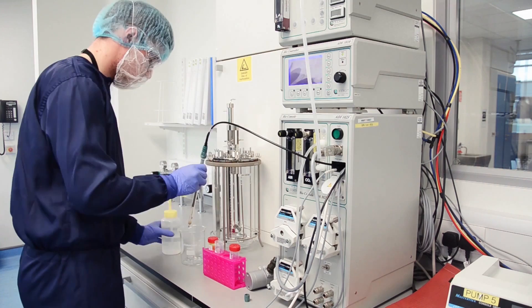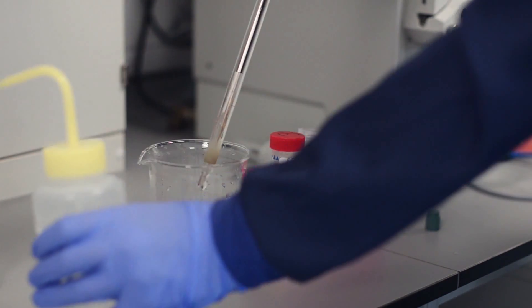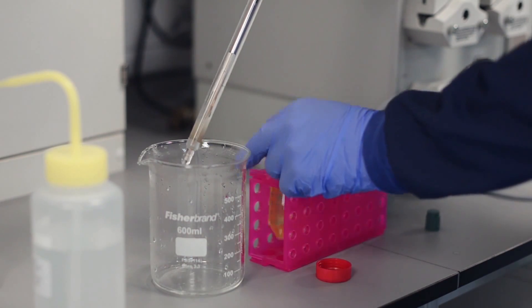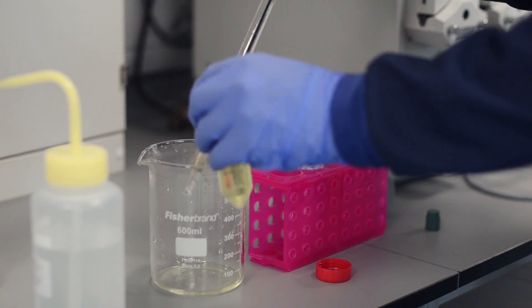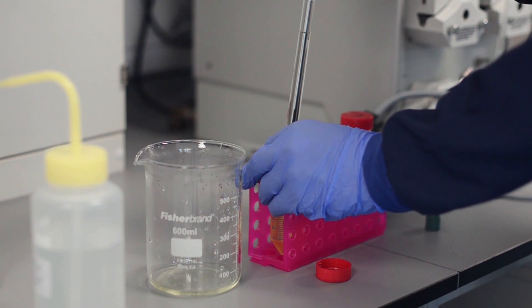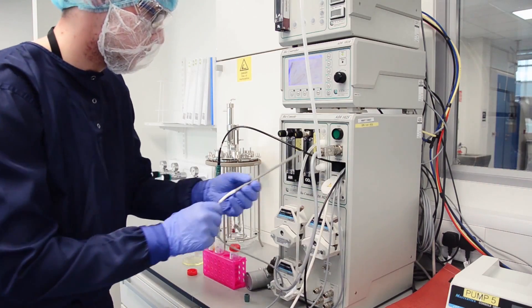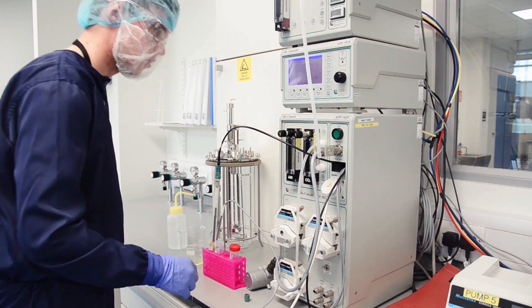The probe is first rinsed with ionized water to ensure residue is removed. It is then rinsed with pH buffer 7 and inserted into the buffer along with the temperature probe, as pH varies with temperature. The controller is then told the pH of the solution it is reading.